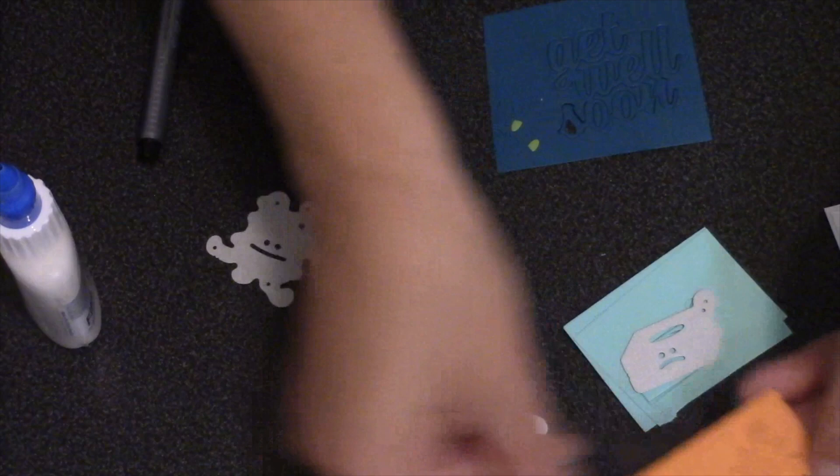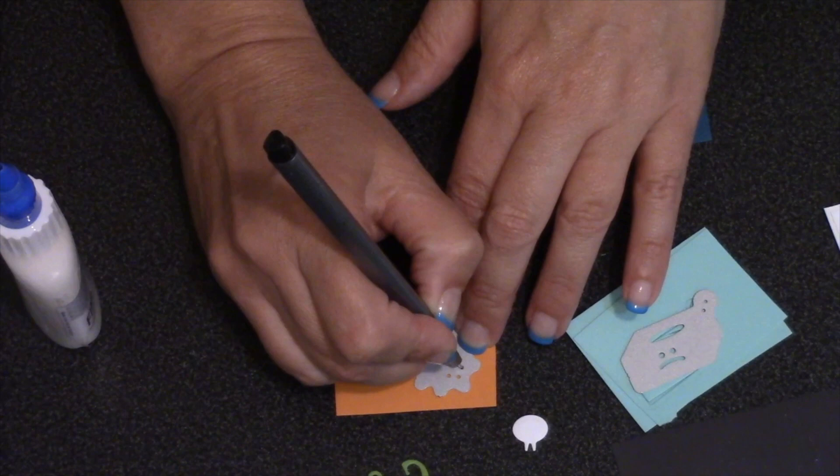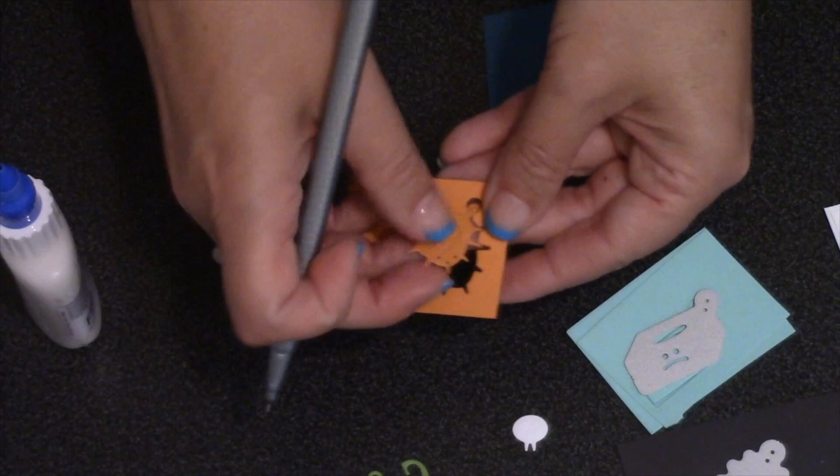The other germ is happy. To do that germ, there isn't much of a stencil feature this time because the eye and the mouth actually come out and get backed with that other little piece. But if you want to add those freckles, you can do that with a black pen or you could probably just freehand that.